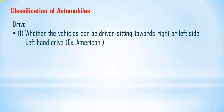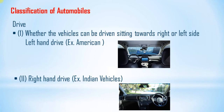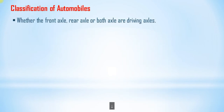We can also classify automobiles according to the type of drive — left-hand drive and right-hand drive — meaning whether the vehicle is driven from the right or left side. Left-hand drive is used in American vehicles, while right-hand drive is used in Indian vehicles.